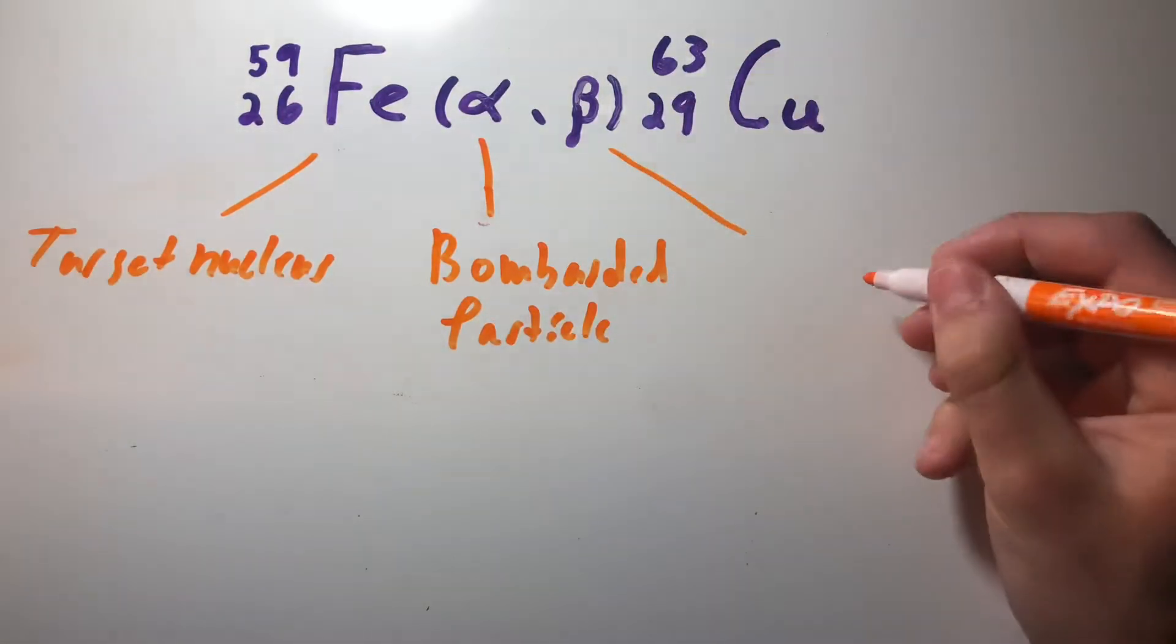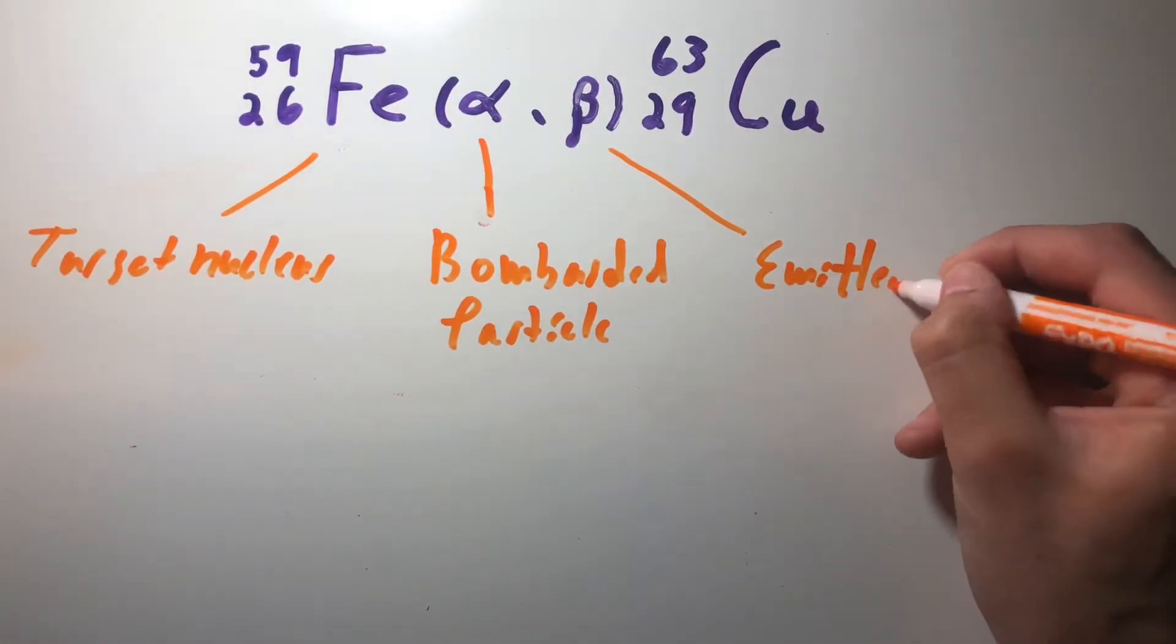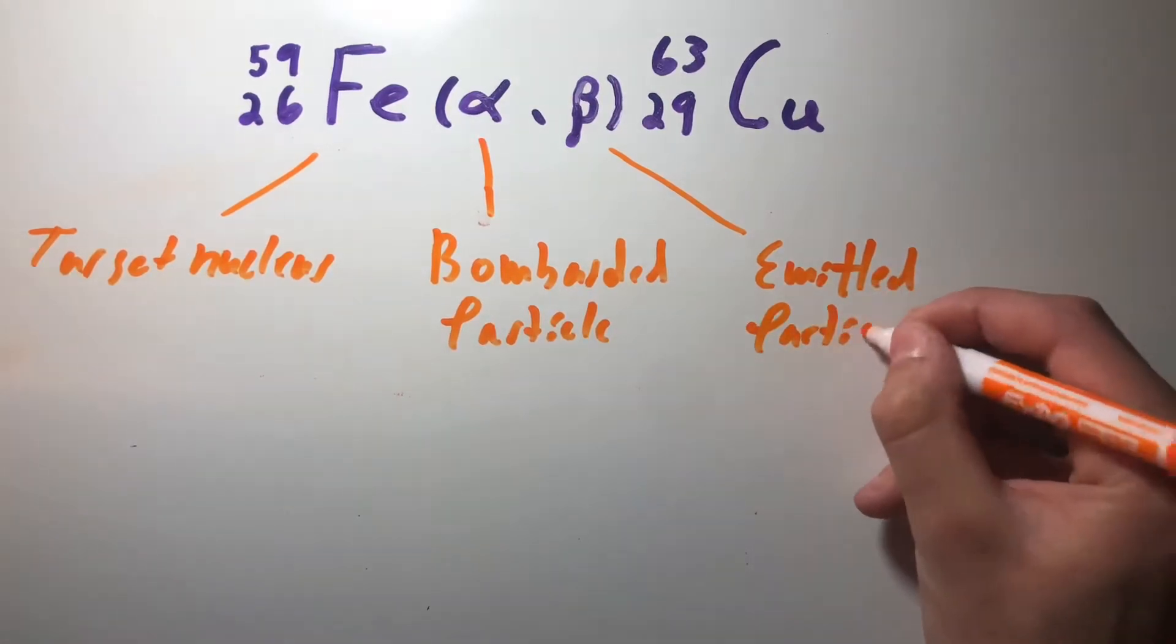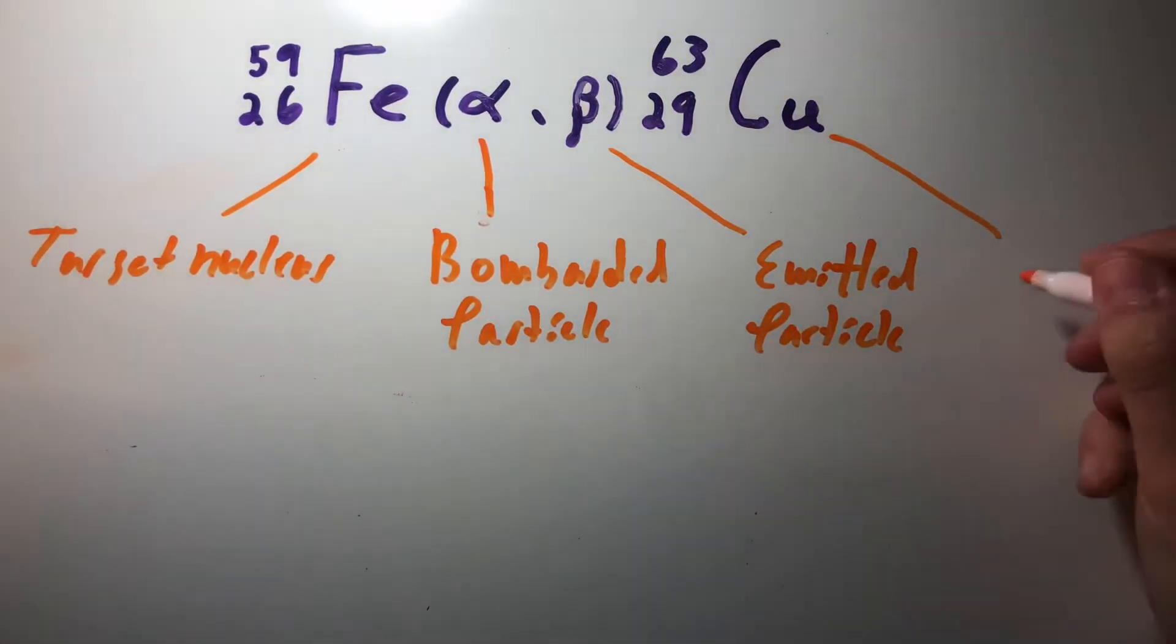Our beta particle is our emitted particle, and our copper is our product.